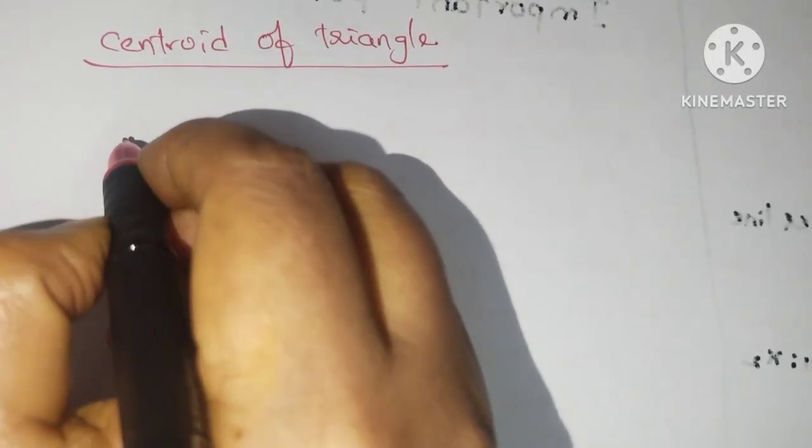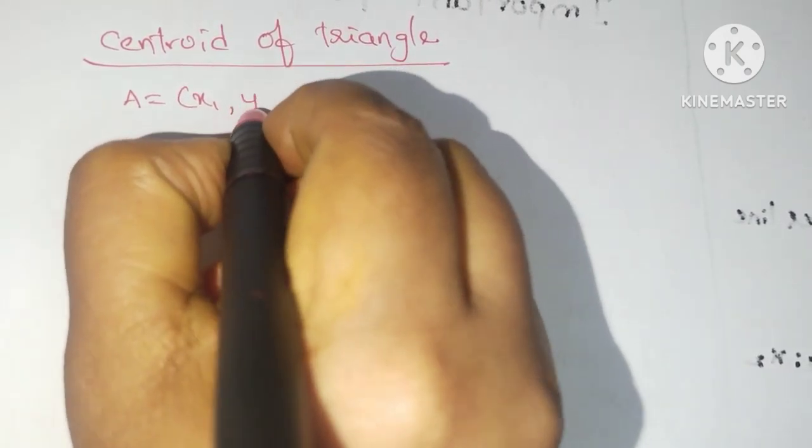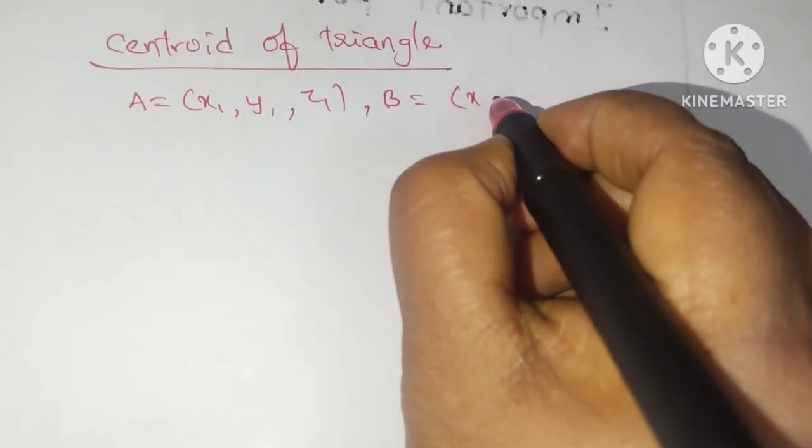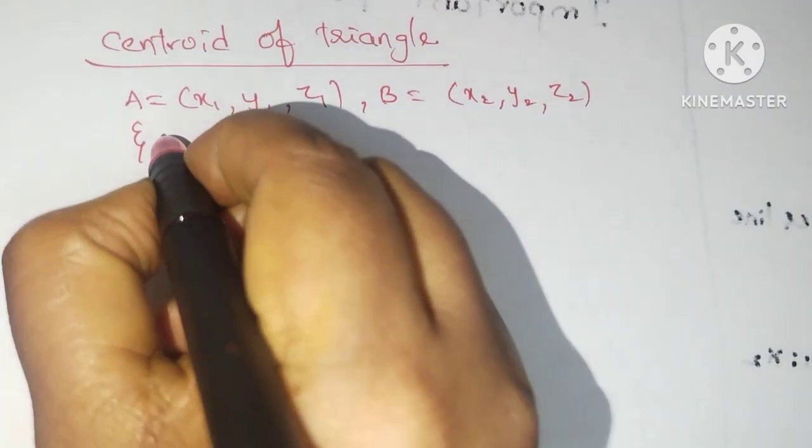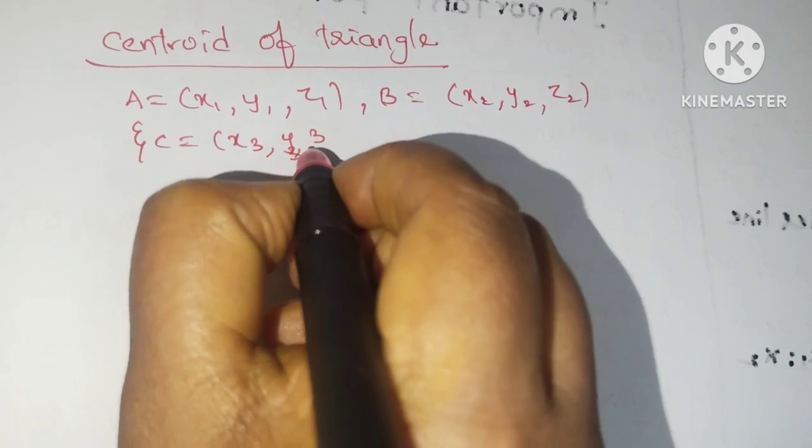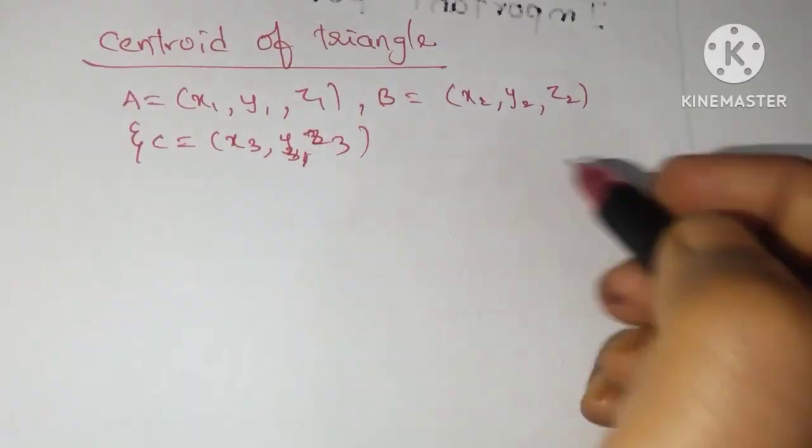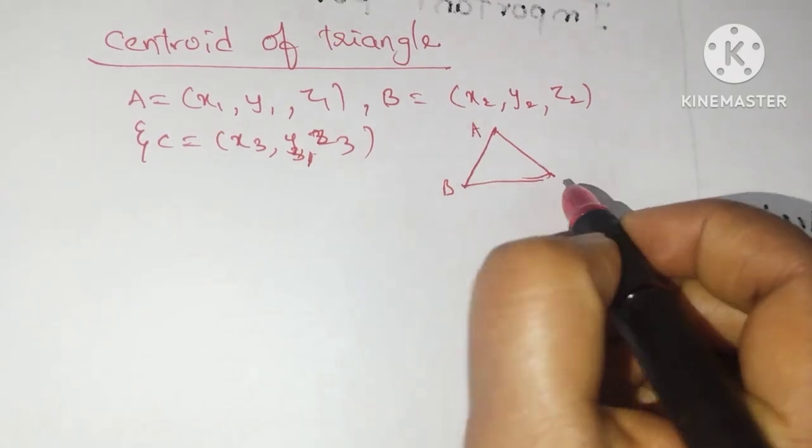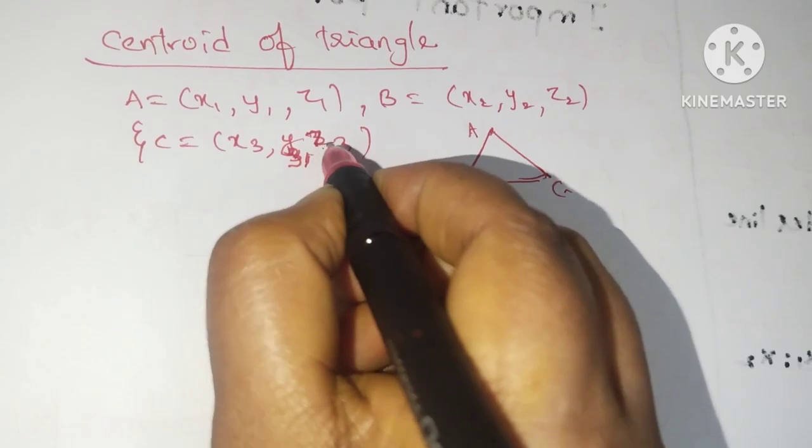Let us consider the points A equals X1, Y1, Z1. B equals X2, Y2, Z2, and C equals X3, Y3, Z3. Here I am taking three vertices for forming a triangle A, B, C. Now I own the centroid of this triangle.